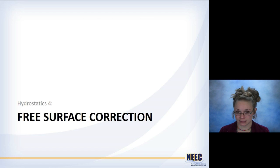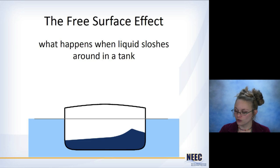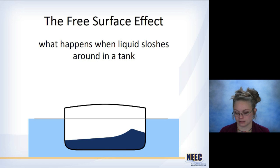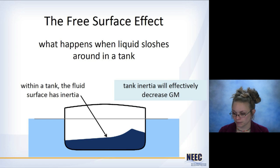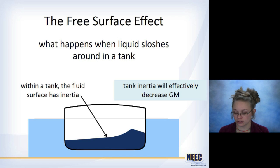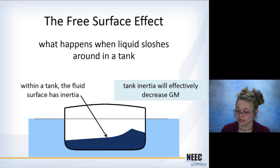One of the big things I want to cover today is the free surface correction. You have a tank in this ship and it has some liquid in it — the tank is not mostly full, not mostly empty, so the liquid is free to slosh around. Within the tank, that liquid's surface has some inertia, and that inertia is going to effectively decrease GM, which means it's going to effectively make your ship less stable.